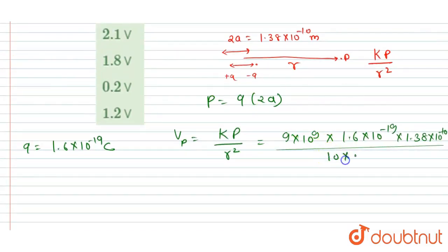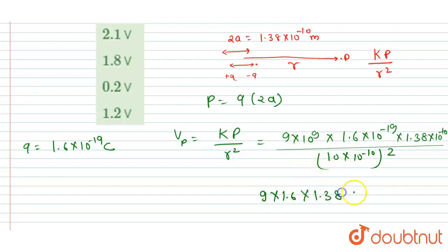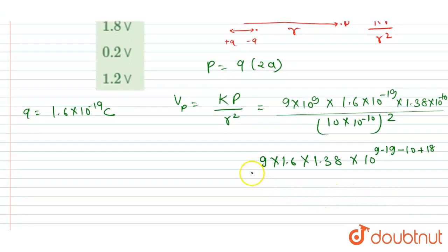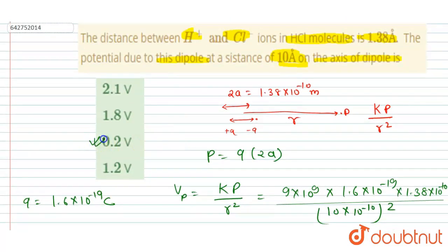In the denominator we write the distance squared. The distance r = 10 angstroms is already given in the question, converted to meters. Solving this: numerator is 1.6 × 9 × 1.38, with powers of 10 combining as 10⁹ × 10⁻¹⁹ × 10⁻¹⁰, and the denominator gives 10⁻¹⁸. The final answer is approximately 0.22 volts. Option C is the correct answer.